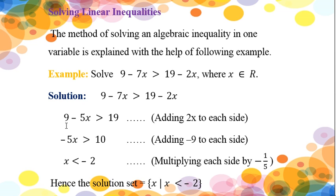Now, this 9 is on the left side of the inequality, which we don't want there. So for this purpose, I will subtract 9 — so minus 9 on both sides. The +9 and -9 will cancel out and 19 - 9 equals 10. So: -5x is greater than 10.